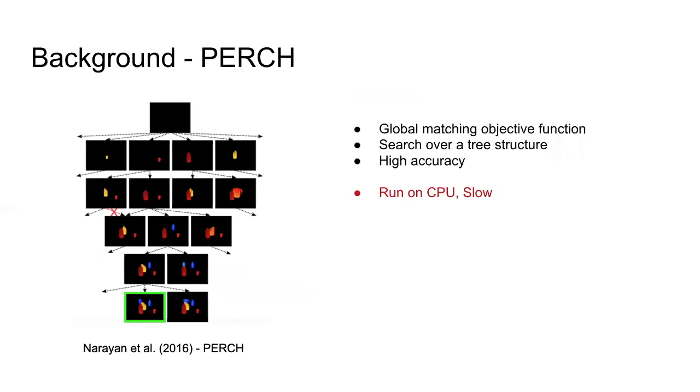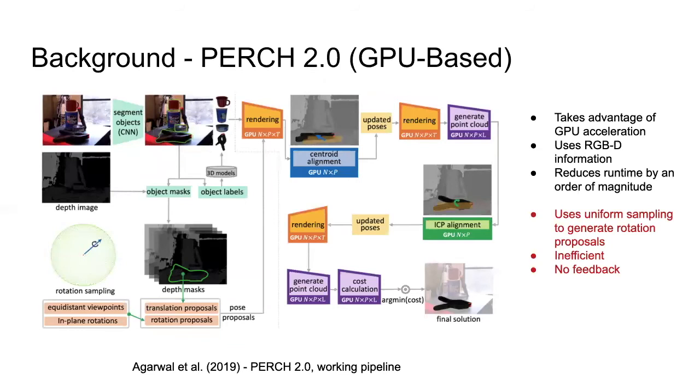Specifically, PERCH is a recent work that introduces a global matching objective function and does a search in a globally efficient manner with tree structure. It guarantees high accuracy but is slow due to limited computational power. In the recent work PERCH 2.0, the algorithm improved the original framework by rendering thousands of candidate poses in parallel on the GPU using RGB data and searching for a global optimum like PERCH. This figure shows the six-DOF pose estimation pipeline of PERCH 2.0.